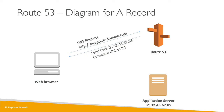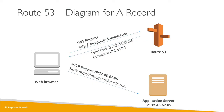Route 53 sends back the IP 32.45.67.85 — that's an A record, a URL-to-IP mapping. Now the web browser has the IP and makes an HTTP request directly to it, reaching the application server. The browser includes the hostname myapp.mydomain.com in the request, and the application server replies with an HTTP response.